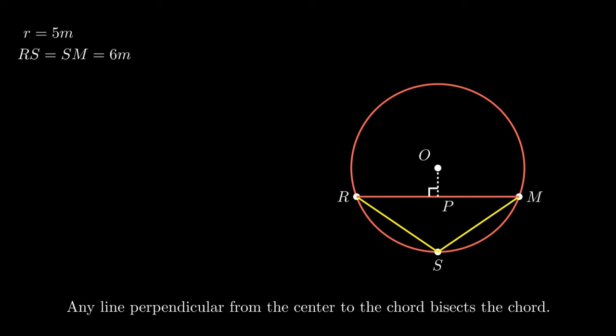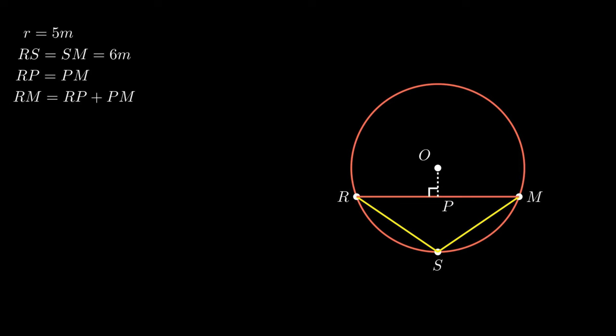By the perpendicular bisector theorem, segment RP equals segment PM. From the figure, segment RM equals the sum of segment RP and segment PM. Therefore, segment RM becomes twice of segment RP. To find the length of segment RM, we only need to find the length of segment RP. For this, we join point R to point O.